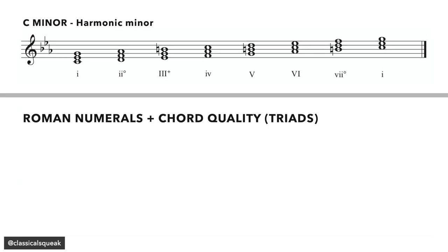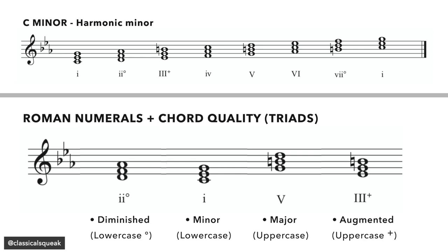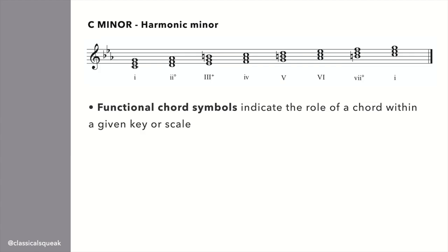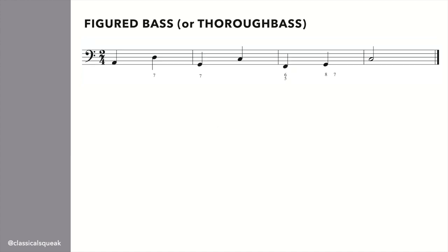The case of the Roman numeral tells you what the quality of the chord is. Uppercase implies a major chord. Lowercase is a minor chord. Lowercase with a tiny degree sign is diminished. And uppercase with a tiny plus sign is augmented. All of these triads were labeled using functional chord symbols. Functional chord symbols are usually written below the staff and will also indicate the inversion of the chord.